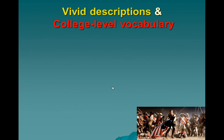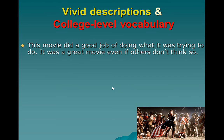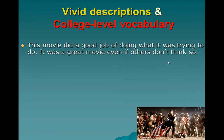For vivid descriptions and college-level vocabulary: there are things accepted in high school writing that are not acceptable in college. High school writing lets you be vague. You can say things like, 'This movie did a good job of doing what it was trying to do. It was a great movie even if others don't think so.' If I got a sentence like that in a paper, my comments would immediately be: what was it trying to do? Who's saying it didn't do it? Being specific rather than vague is what sets college-level writing apart from high school writing.